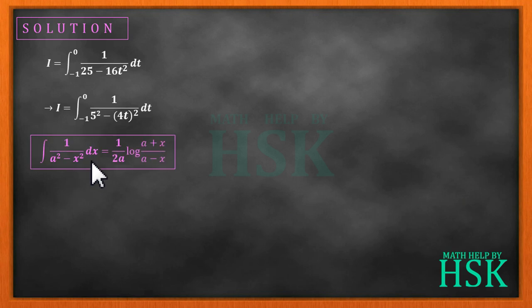Applying the formula: Integration of 1 upon a square minus x square is equal to 1 upon 2a times log of a plus x upon a minus x. So on applying the formula,